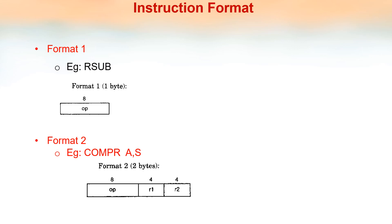Format 2 is a 2-byte format, that is 16 bits. The first 8 bits represent the opcode, the next 4 bits represent register R1, and the remaining 4 bits represent register R2. So it is the opcode with 2 registers, totaling 16 bits. For example, COMPR A, S — COMPR is the opcode taking 8 bits, and A and S each take 4 bits.